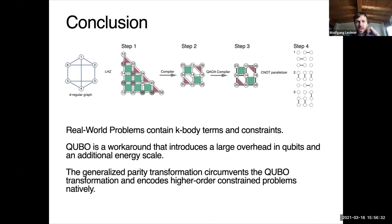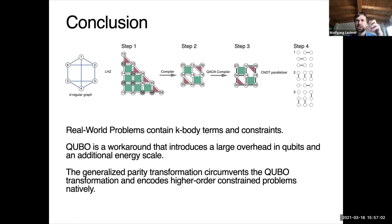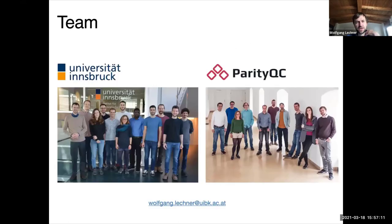In conclusion: real-world problems contain K-body terms (they are hypergraphs) and have side conditions — something that cannot be represented as a simple graph. QUBO is a workaround, but it introduces large overhead in qubits or energy scale. With our parity transformation, we completely circumvent the QUBO transformation and directly encode higher-order and constrained problems natively. My research group is at the University of Innsbruck, and the company working on the compiler is Parity Quantum Computing. I am very interested in collaborations on both the industry and research sides — please drop me an email. Thank you very much.